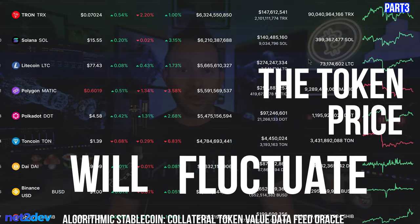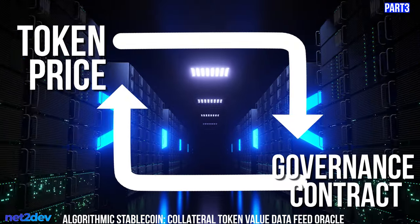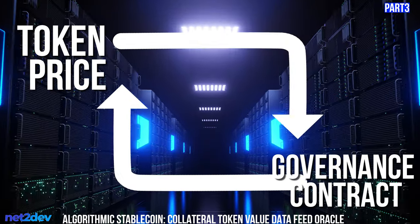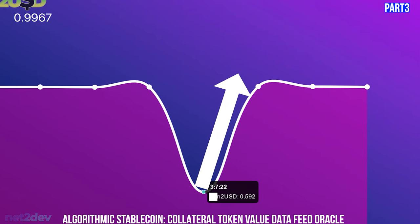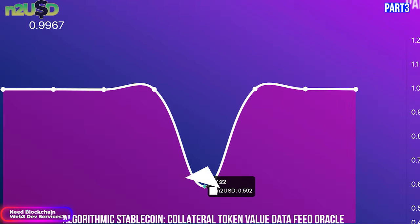We can grab a calculator and get the required collateral, divide by the token price, and that gives us the amount of tokens to deposit into the vault. The problem is the token price will fluctuate — specifically the unstable collateral — so we need to obtain the price of both collaterals in real time and feed that onto the governance smart contract, which will either burn or mint tokens to keep the stablecoin pegged to the US dollar.